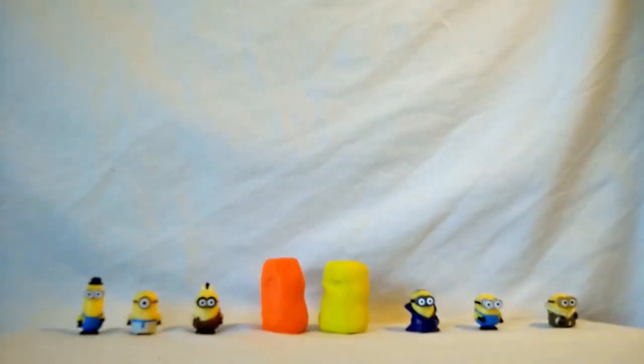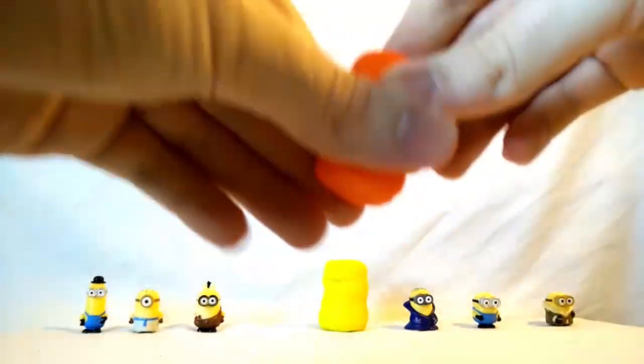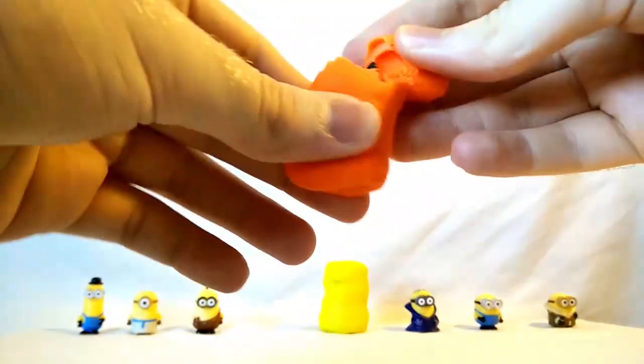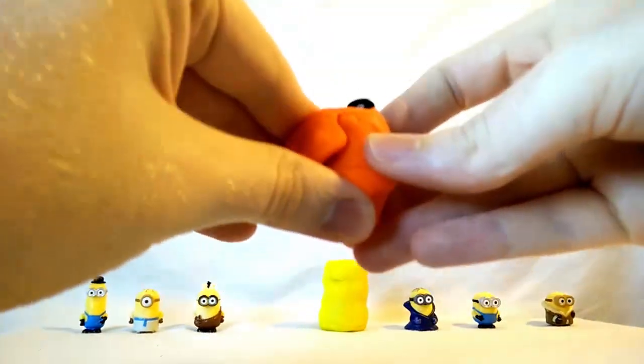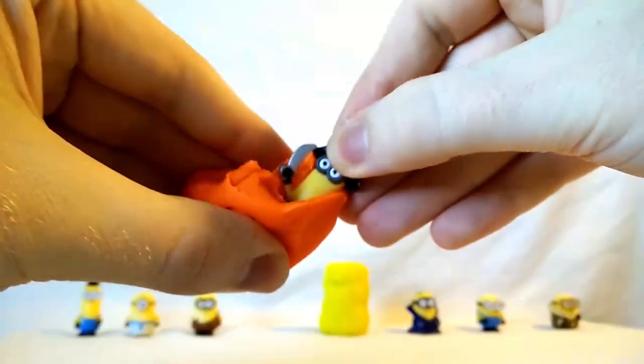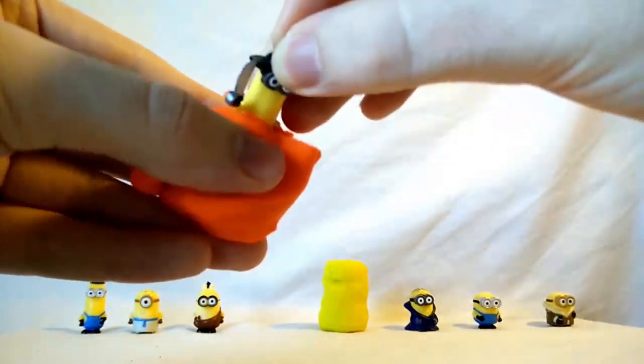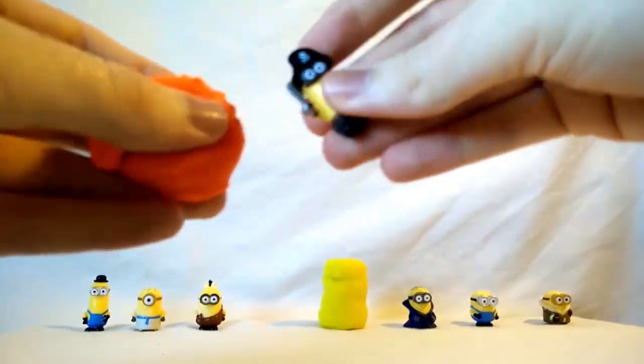All right, only two eggs to go. What kind of minions do you think will be in these eggs? Let's start with the orange egg. Orange is another of my favorite colors, so I'm really looking forward to seeing who's inside of it. Oh, it looks like they have a pirate hat and a sword. Yep, this is a pirate minion.